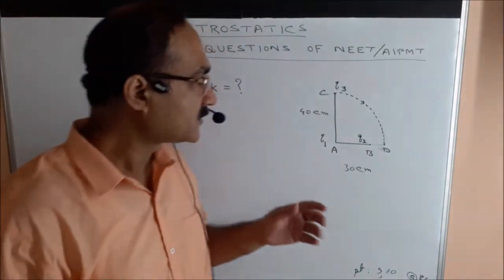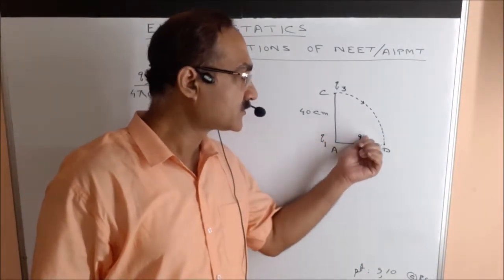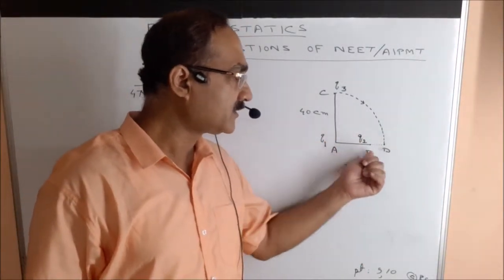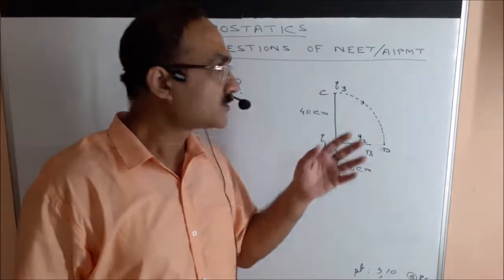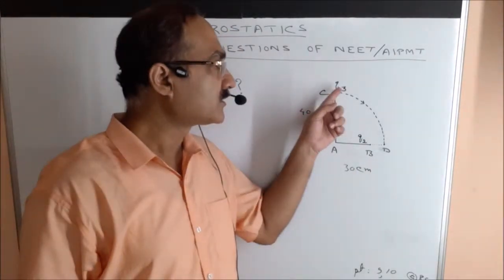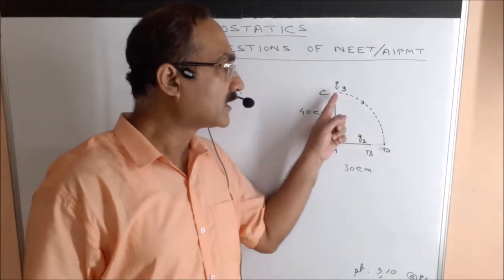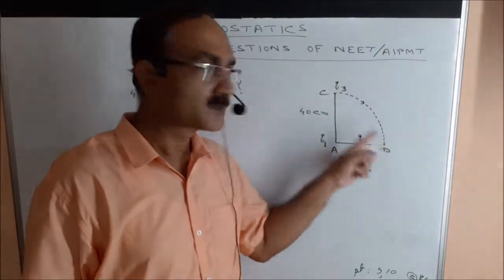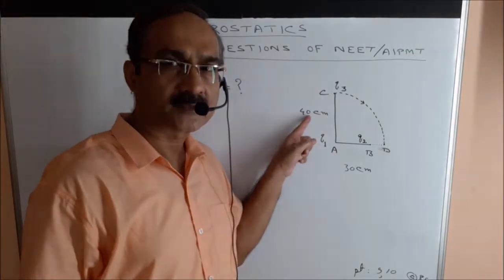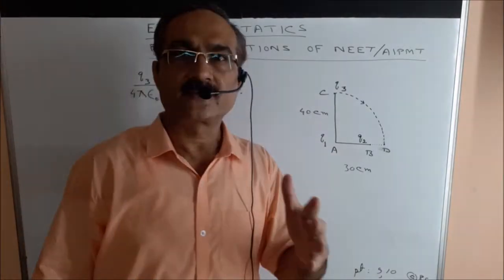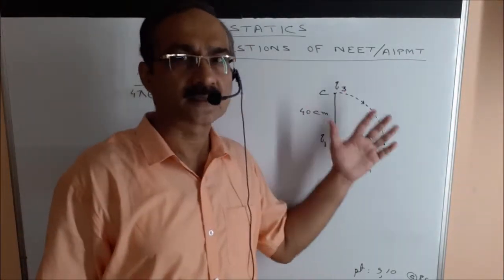The question here is: two charges Q1 and Q2 are placed at A and B, which are 30 cm apart, and a third charge Q3 is moved from C to D along a circular path. This distance is given to be 40 cm. We have to find the change in potential energy of the system.